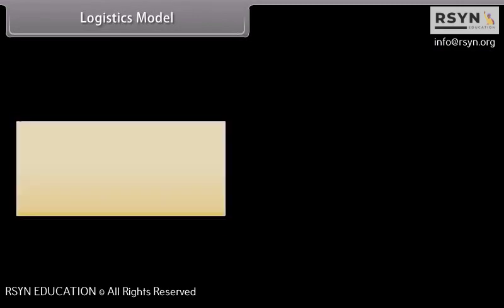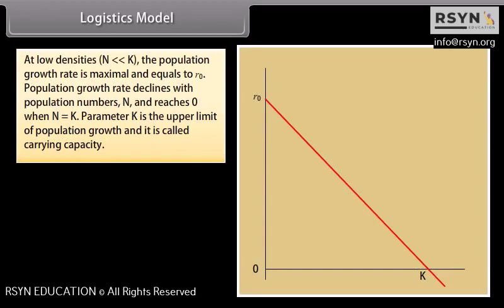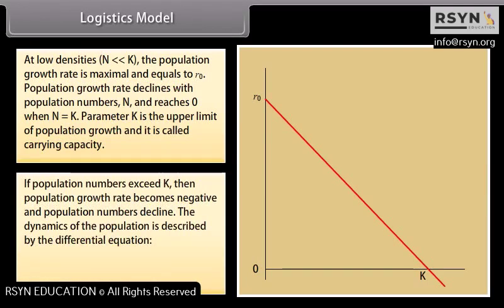The Logistic Model suggests the rate of population increase may be limited by population density. The growth rate is R = R₀ × (1 - N/K). At low densities (N << K), the growth rate is maximum and equals R₀. Growth rate declines as N increases and reaches 0 when N = K, where K is the carrying capacity. If population numbers exceed K, the growth rate becomes negative and population declines. This is described by the differential equation: dN/dT = R₀N(1 - N/K).